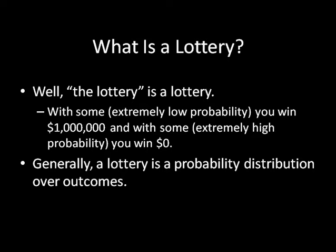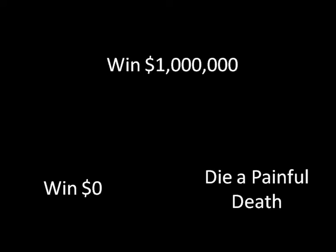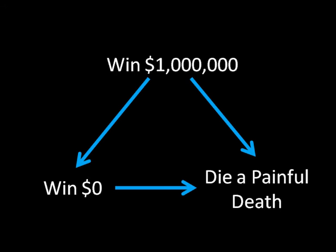Now, in contrast, before we were just talking about preferences over outcomes that occur with certainty. So we were talking about winning a million dollars, winning zero dollars, and dying a painful death. And we said that someone might have preferences that look like this, where they prefer winning a million dollars to winning zero dollars, and prefer winning zero dollars to dying a painful death.